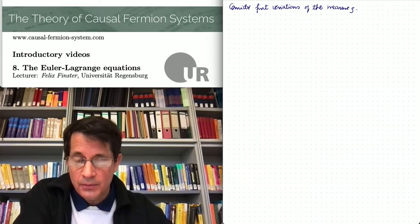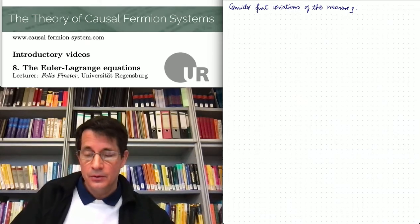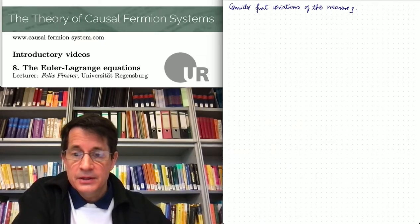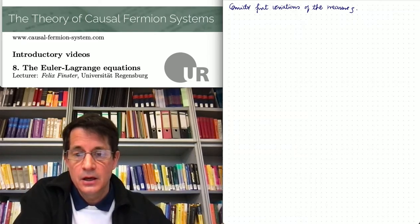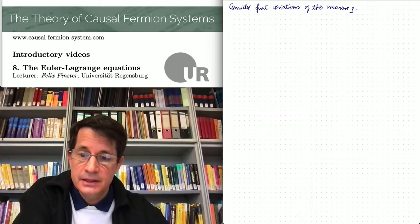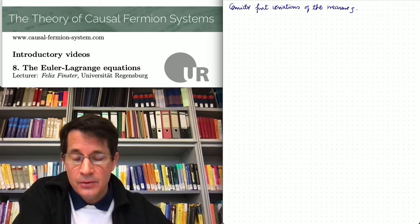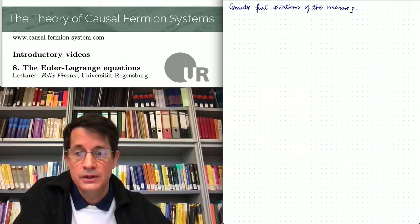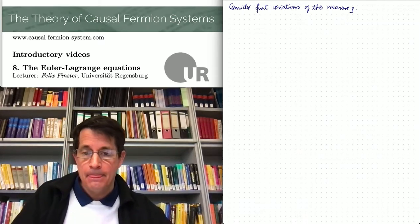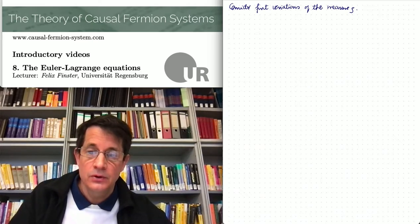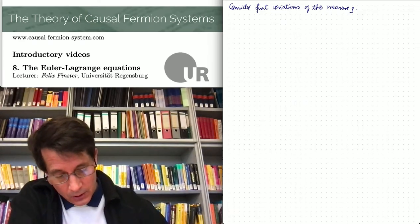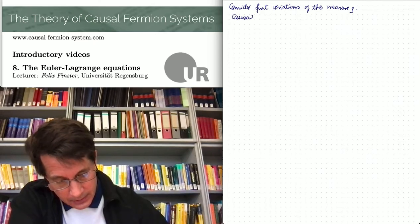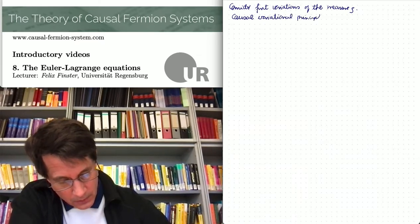There is one complication, namely the three constraints in the causal action principle. For this reason, I decided to begin with a simpler setting of causal variational principles in the compact setting. In this setting, I'll derive the Euler-Lagrange equations in detail. Then I will state the Euler-Lagrange equations in full generality for the causal action principle and make a few remarks. At the end of the video, I will make the connection to Noether's theorem and surface layer integrals. So let's begin in the setting of causal variational principles in the compact setting.